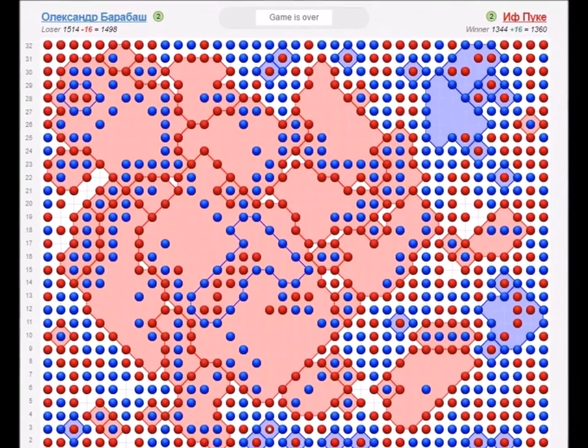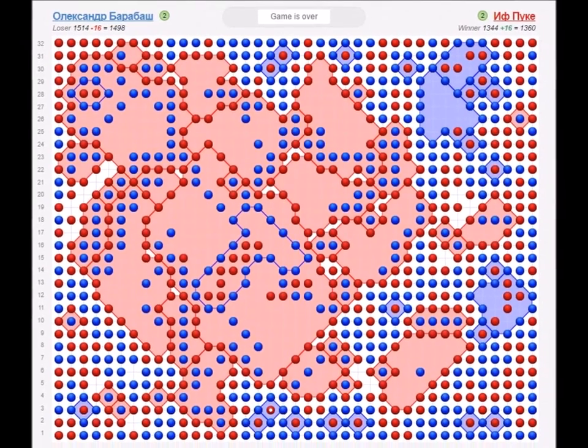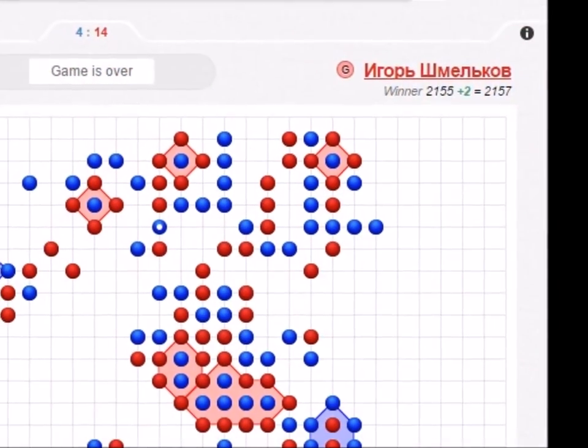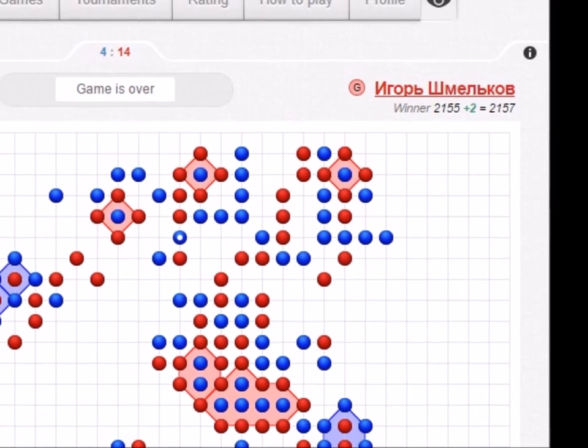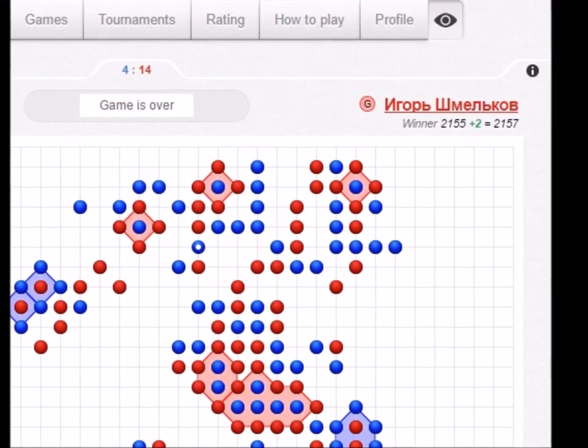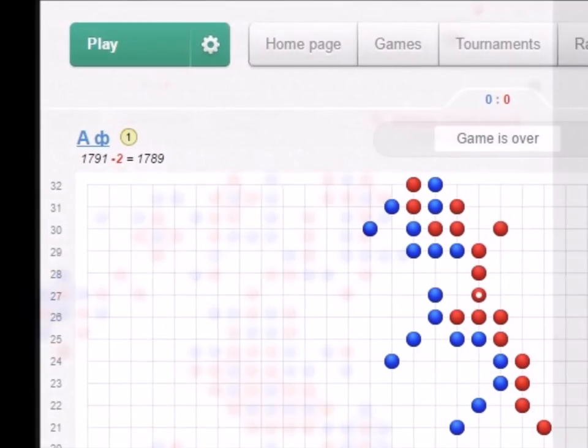The game can continue until the whole field is filled with dots. At the end of the game, the advantage of at least one encircled dot brings a victory. If the score is even, the game ends in a draw.